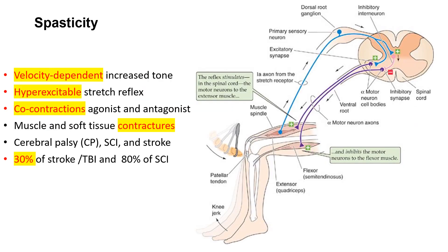To be able to manage post-stroke spasticity, it is important to understand its pathophysiology. Spasticity is the reduction in the inhibition of the upper motor neuron on the lower motor neuron, which results in a velocity-dependent increase in the tone of peripheral muscles with hyperexcitability. It is also important to recognize the co-contraction of antagonists and agonists, the neglect of which results in muscle contractures and deformity.